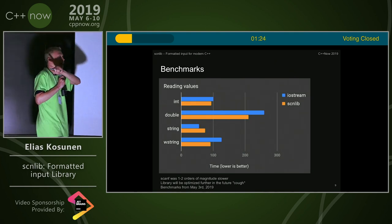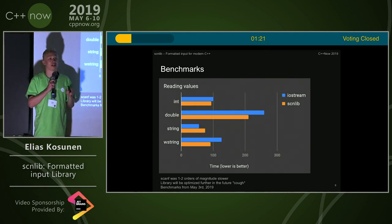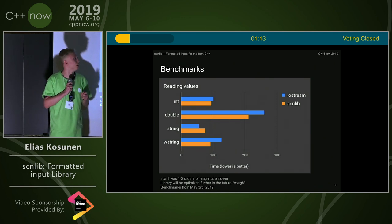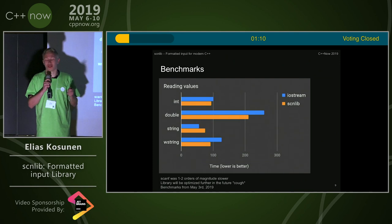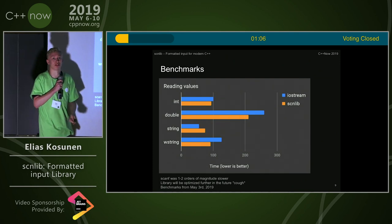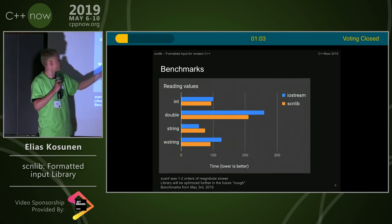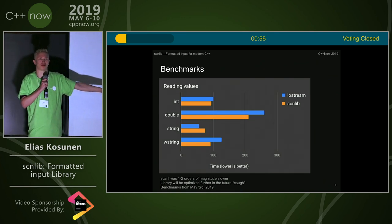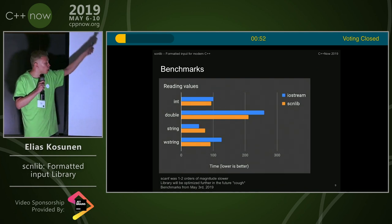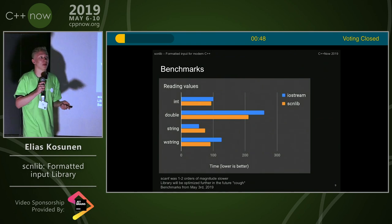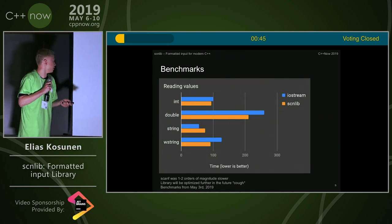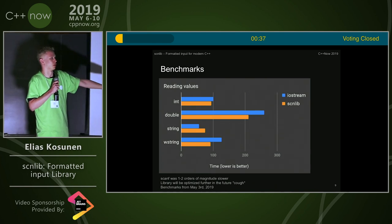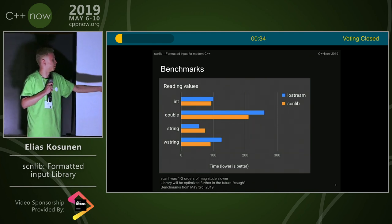A little benchmarking. I haven't paid any attention to making this fast yet — this is really new. But it's really easy to beat IO streams. I have that stupid integer reading algorithm made in IO streams — SCN beats it. Double: even better. It loses on string though. And scanF was one to two orders of magnitude slower for some reason — I don't know if I'm doing something wrong. These benchmarks are from May 3rd, about a week ago. It's going to be optimized in the future.